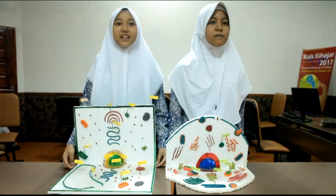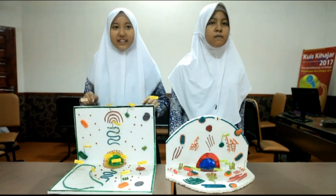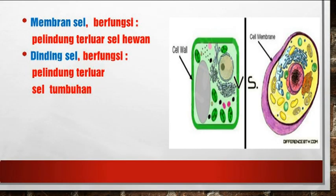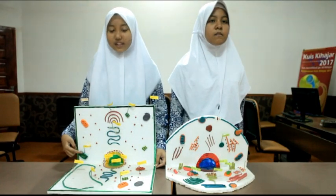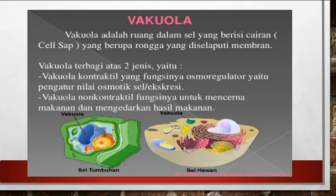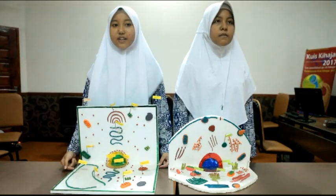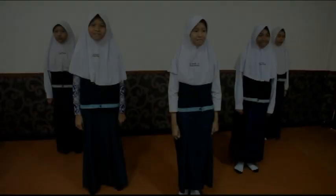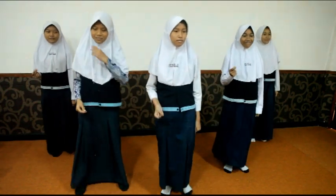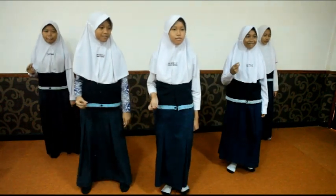Selanjutnya, saya akan mempresentasikan sel tumbuhan. Bagian terluar sel tumbuhan adalah dinding sel, berfungsi sebagai pelindung dan penyaring sel. Yang kedua, plastida, berfungsi sebagai proses fotosintesis. Yang ketiga, vakuola, berukuran sangat besar, berfungsi pada pencernaan sel dan osmoregulator. Terima kasih.